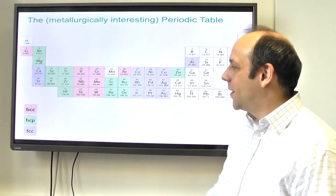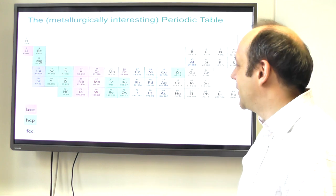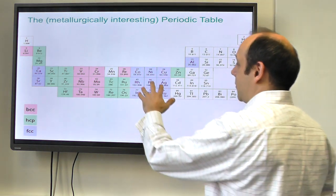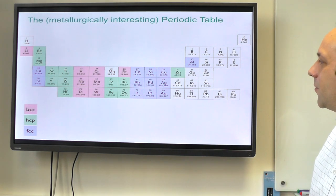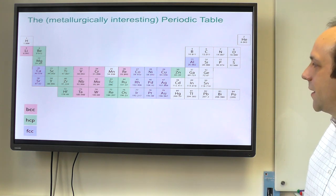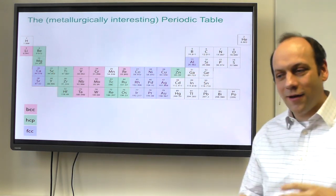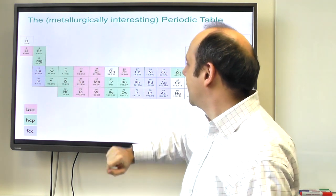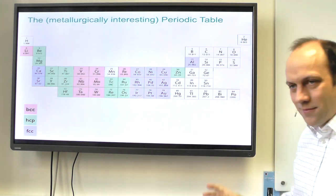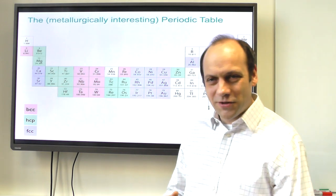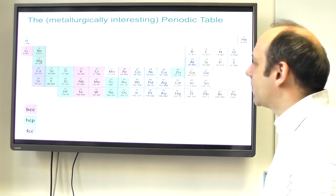Cobalt is FCC at low temperatures — it can also be HCP sometimes. Nickel's FCC, copper's FCC. Going down through the periodic table, the row below is also FCC. Coming over to titanium, zirconium, and hafnium, these are hexagonal. In between there are BCC metals, and then some that are confused. Iron and magnesium are magnetic, which complicates things. Iron is BCC at room temperature, FCC at elevated temperatures, and BCC again at very high temperatures — all related to the magnetism.